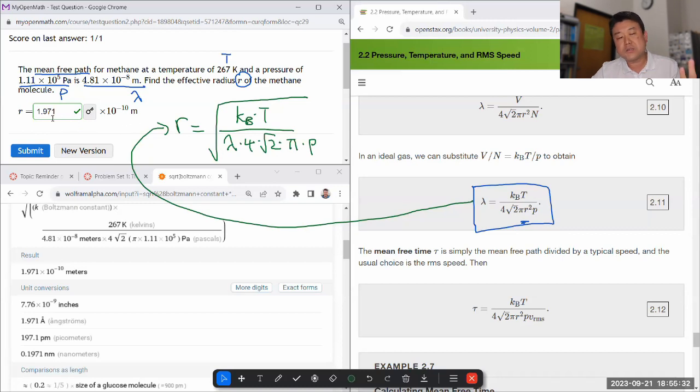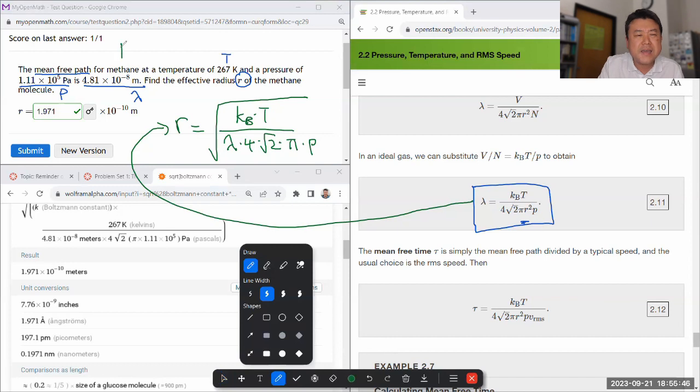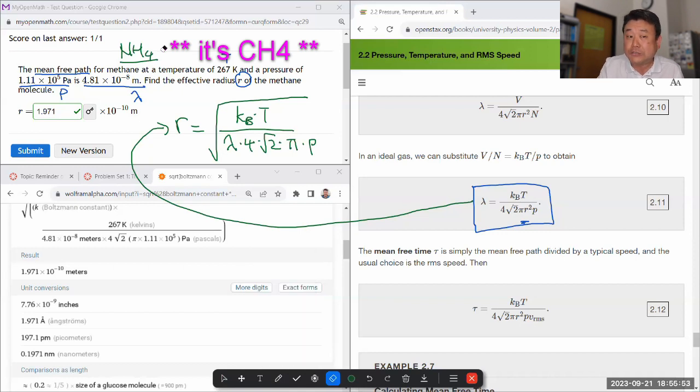Comparing it to the size of a hydrogen atom, which is 0.5 times 10 to the minus 10 meters, it's about four times as large. So I guess that's how I make sense of this number. Maybe that makes sense, maybe not—I'm not a chemist. Unless it's NH4, if it is then I think this makes perfect sense.